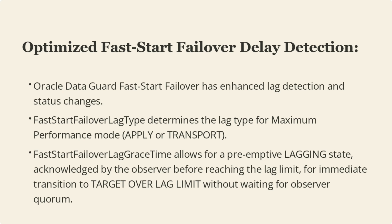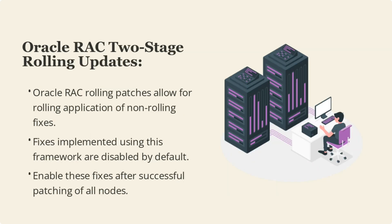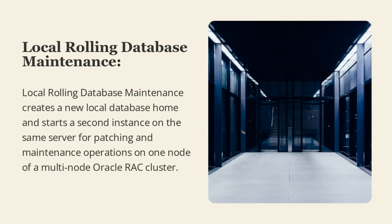Oracle RAC rolling patches allow the rolling application of non-rolling fixes. These fixes are disabled by default and can be enabled after successful patching of all nodes. Local rolling database maintenance creates a new local database home and starts a second instance on the same server for patching and maintenance operations on one node of a multinode Oracle RAC cluster.